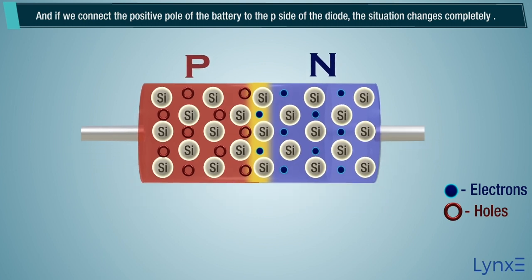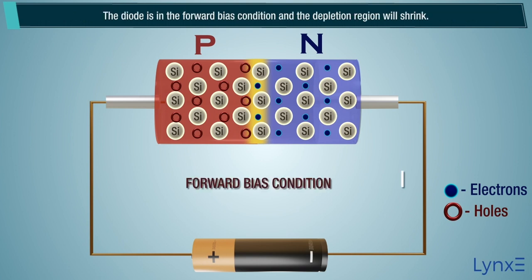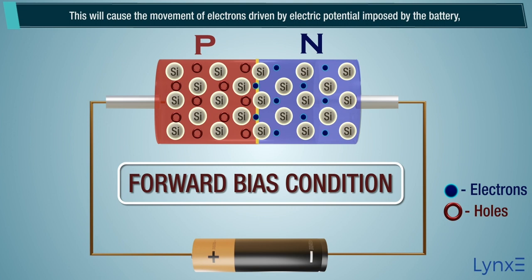And if we connect the positive pole of the battery to the P-side of the diode, the situation changes completely. The diode is in the forward bias condition, and the depletion region will shrink. This will cause the movement of electrons driven by electric potential imposed by the battery.